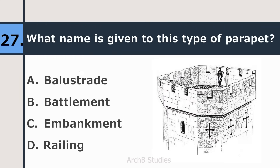Twenty-seventh question: what name is given to this type of parapet — balustrade, settlement, embankment, or railing? The correct answer is Battlement.